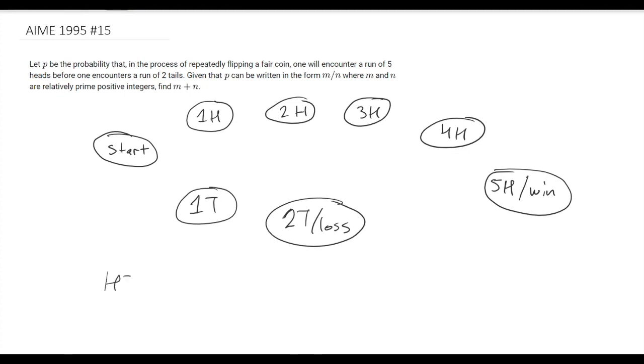So this is every possible state. If I have some random sequence like H, H, T, whatever, then one of these states describes where I am right now. In this case I have three heads, so I'd be at this state.